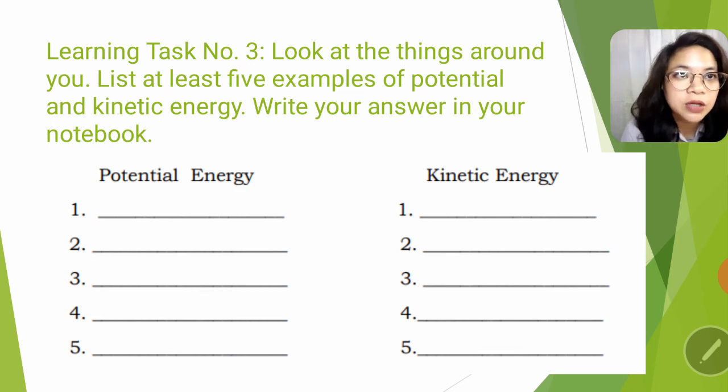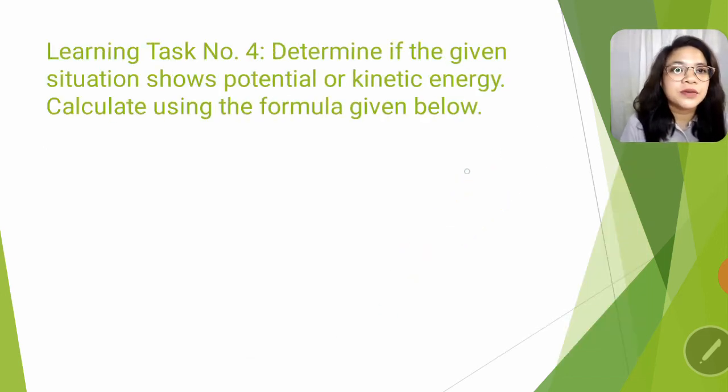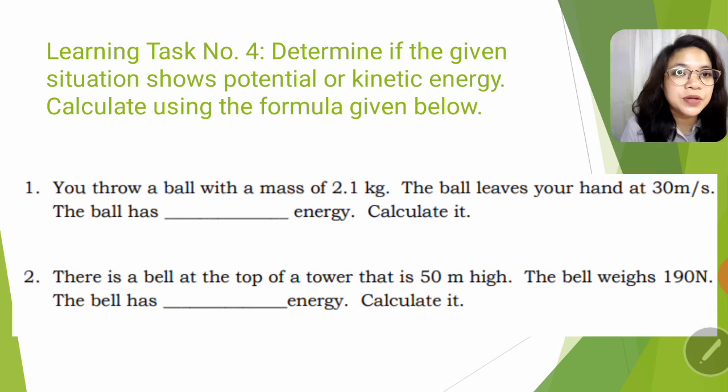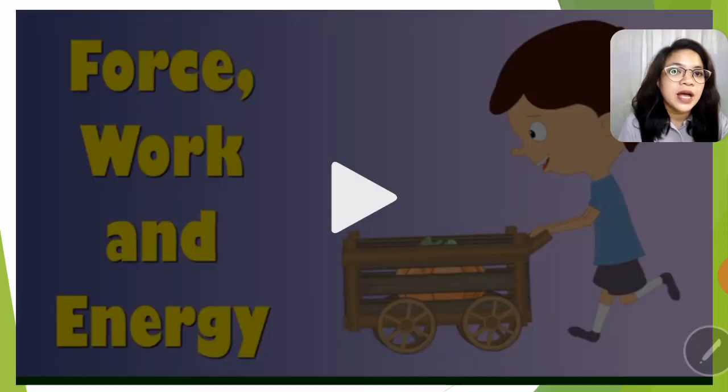Let's proceed for learning task number three. Look at the things around you. List at least five examples of potential and kinetic energy. Write your answer in your paper. Five examples of potential energy, then five examples of kinetic energy. Learning task number four, determine if the given situation shows potential or kinetic energy, then calculate it using the formula given below. Kinetic energy is one half mv squared. Potential energy is mass times gravity times the height. Gravity or the acceleration due to gravity, that is 9.8 meter per second squared. So we're just going to first determine kung ang problem ba ay kinetic or potential energy, saka kayo magde-decide kung anong formula ang inyong gagamitin.